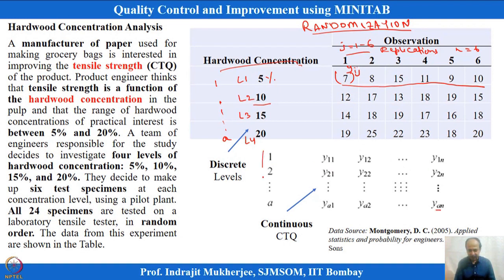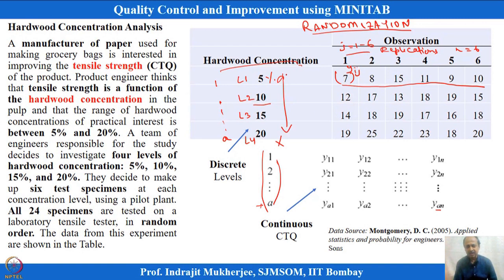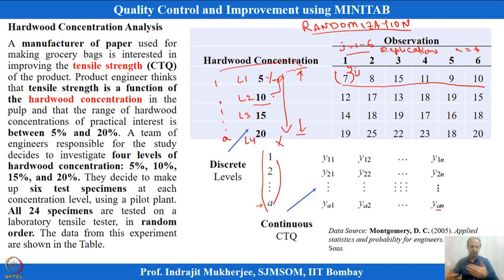The factor is hardwood concentration, with the number of levels decided before experimentation. The range and levels of the factor are selected based on engineering judgment — just above the minimum and below the maximum of the feasible range, with sufficient gap between levels. The goal is to maximize tensile strength.